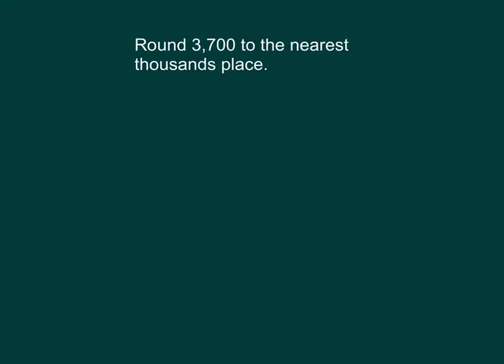Here we're asked to round 3,700 to the nearest thousands place. As we said in the objective, we're going to be making a vertical number line. Since we're rounding to the nearest thousands place, we're looking to answer the question first: how many thousands are in 3,700? The answer is there are three thousands in 3,700.